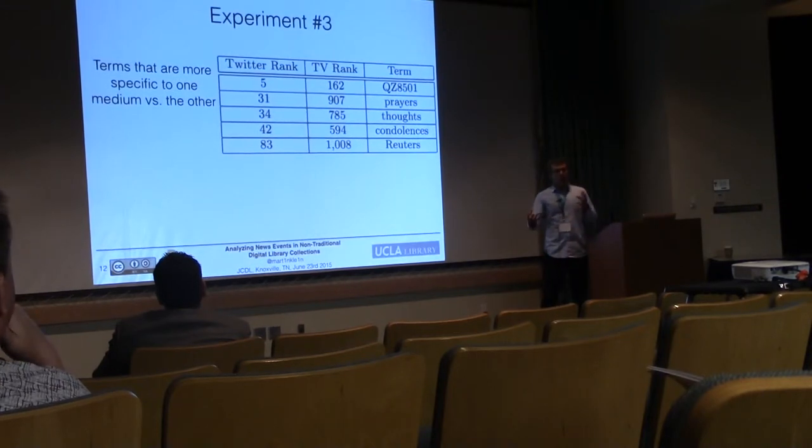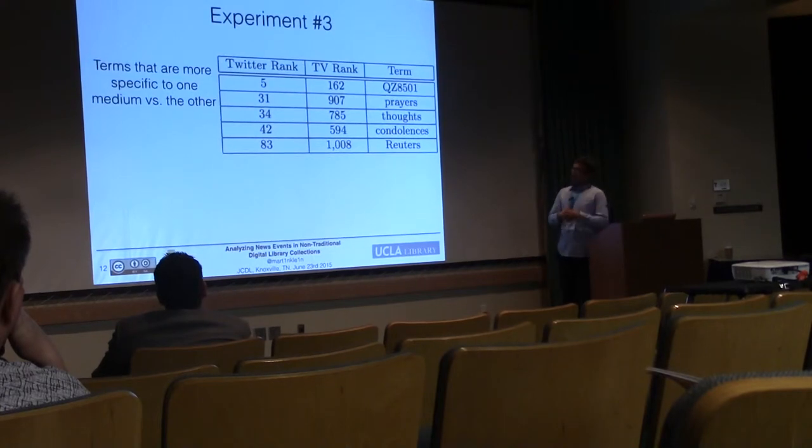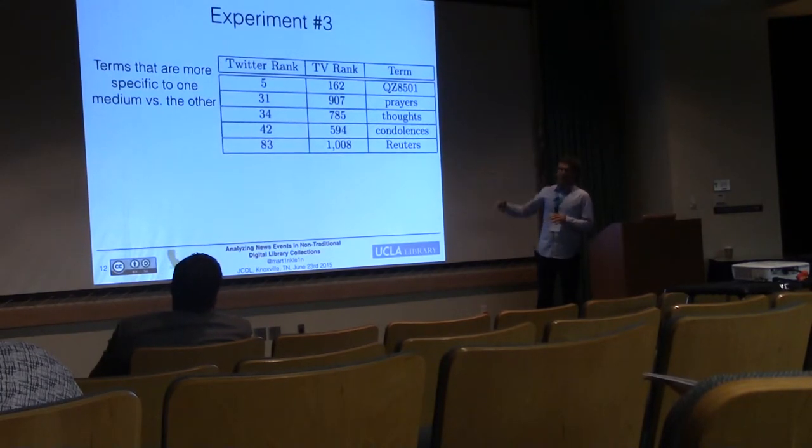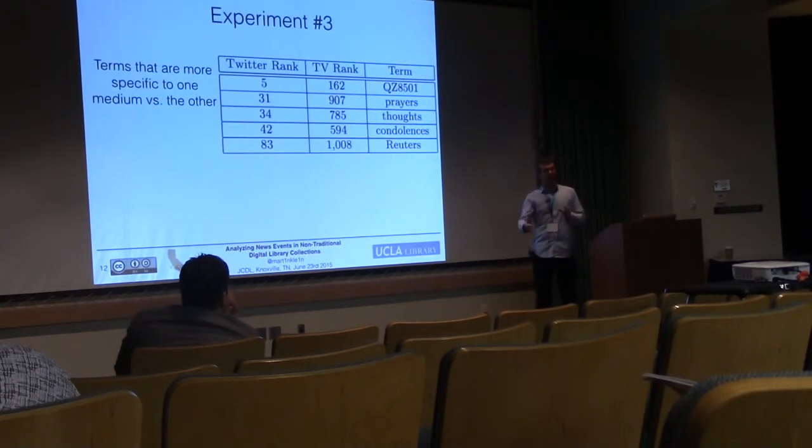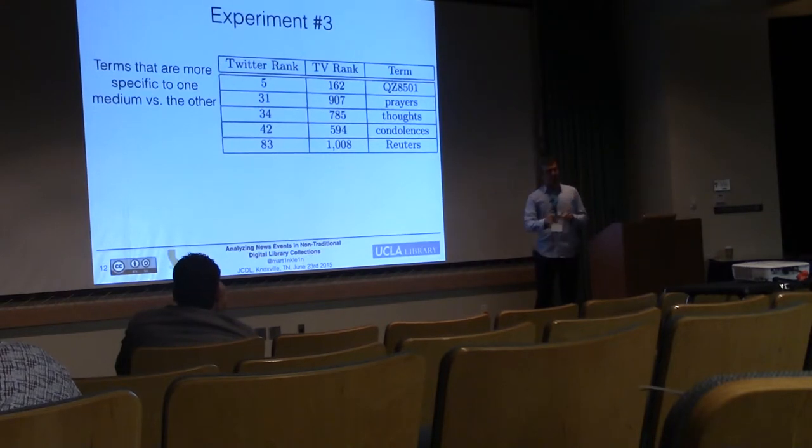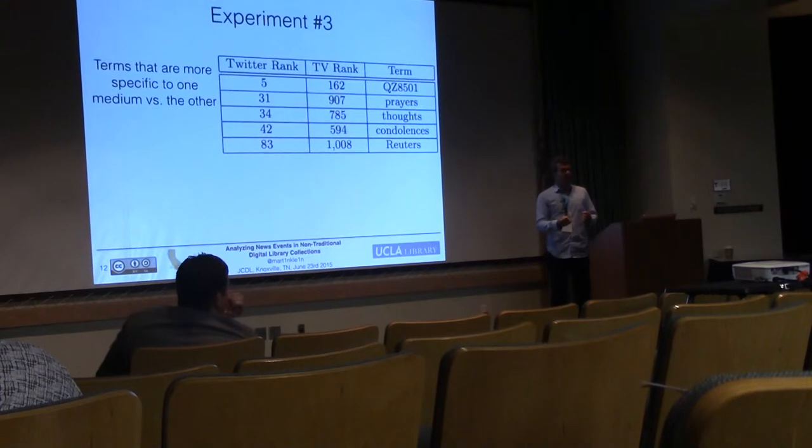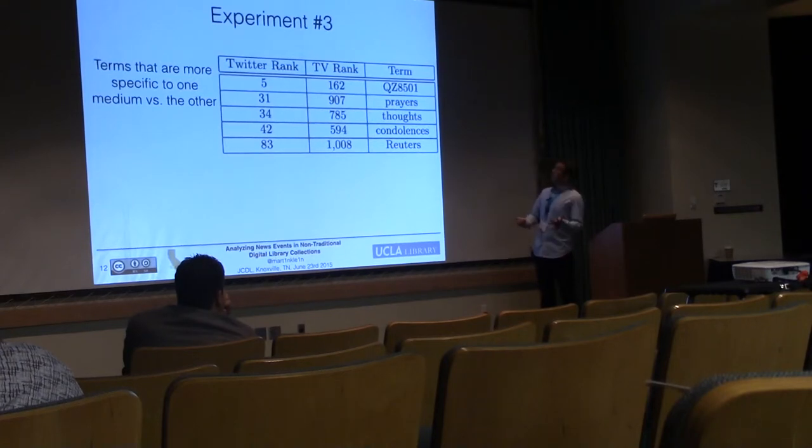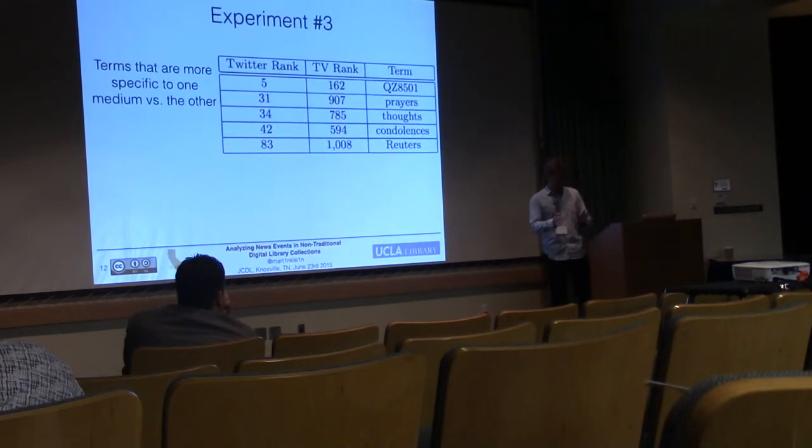Then we started looking at what these two collections have in common. We looked at sheer term frequency—what kind of terms occur in both corpora but with different frequencies. These five lines represent examples of terms that occur in both Twitter and TV news coverage but are more frequently used on Twitter. The fifth most frequent term on Twitter that also occurs in TV news is the flight number QZ8501. That's something you'd expect because this technical phrase might be more natural to Twitter than broadcast news. If you look at those numbers, you have very emotionally charged terms like prayers, thoughts, condolences. This might be something where people want to interact on a more personal level.